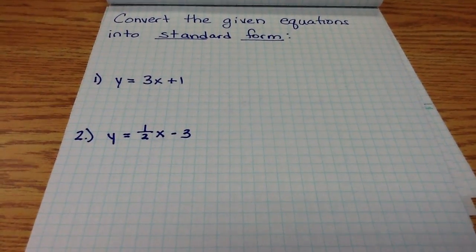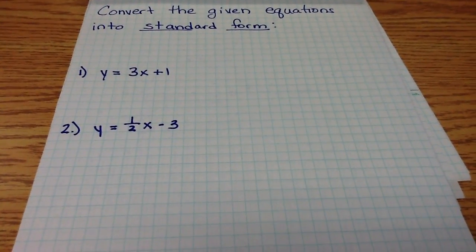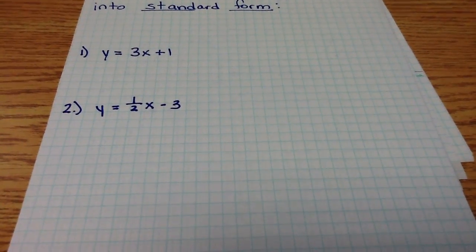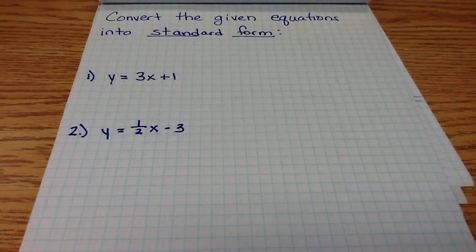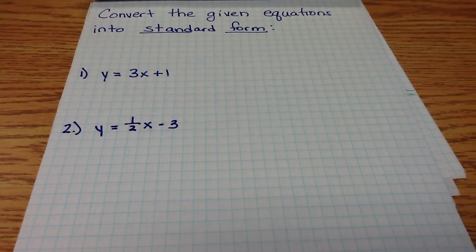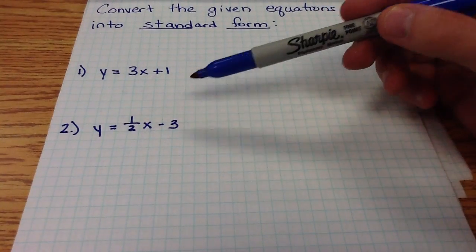In this video, we're going to learn how to convert the given equations into standard form. We'll start with these two equations: y equals 3x plus 1, and y equals one-half x minus 3. These are two separate problems that we'll deal with individually.